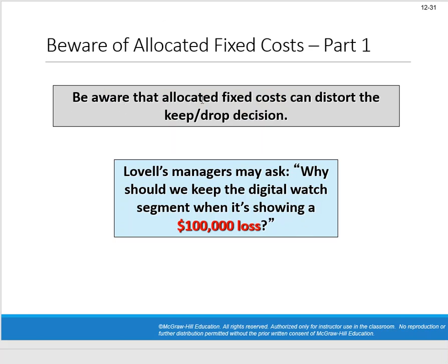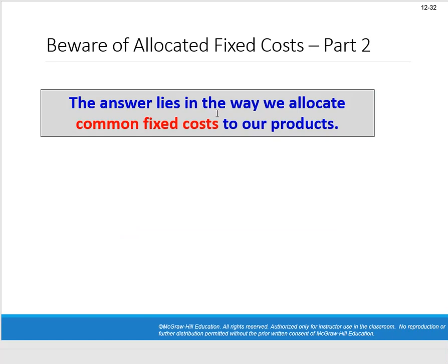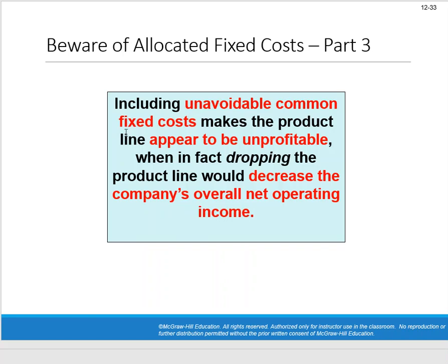Be aware that allocated fixed costs can distort the keep or drop decision. Lavelle's managers may ask: why keep a segment showing a $100,000 loss? The answer lies in how common fixed costs are allocated to products — which shouldn't be done for managerial decision-making. Including unavoidable common fixed costs makes a product line appear unprofitable when in fact dropping it would decrease the company's overall net operating income. The answer is: keep the digital watch segment.